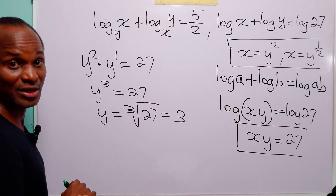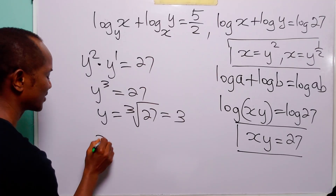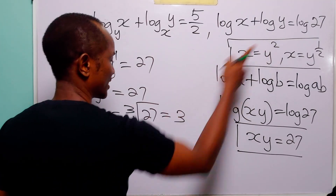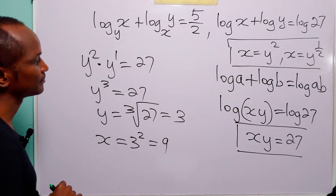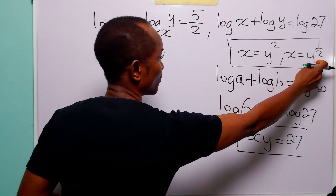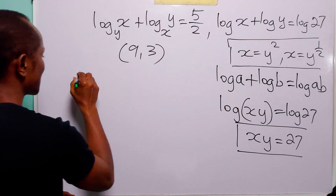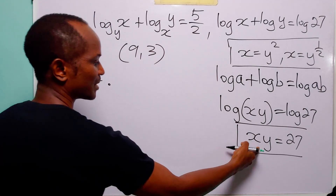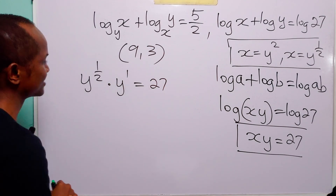Now we have a value for y, so we go back to find x: x equals y squared, that is 3 squared, which equals 9. In the second case, x equals y to the power half. Substituting into xy equals 27, we have y to the power half multiplied by y to the power 1 equals 27.